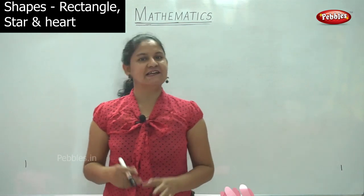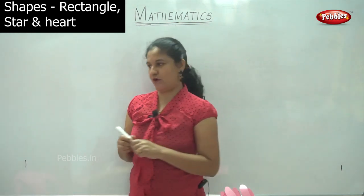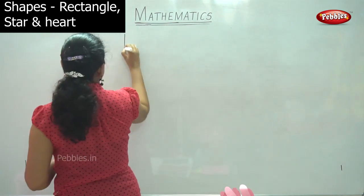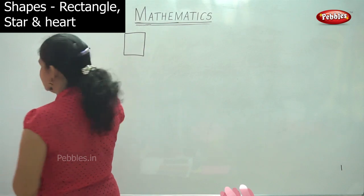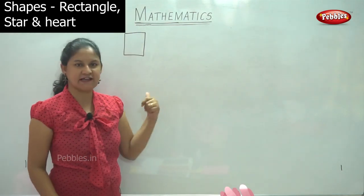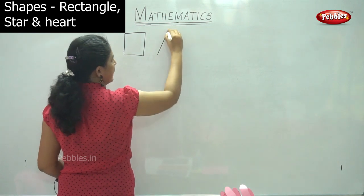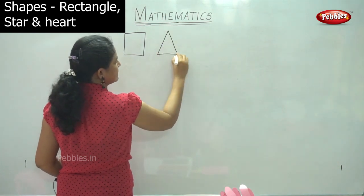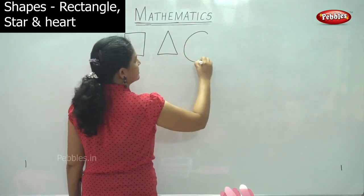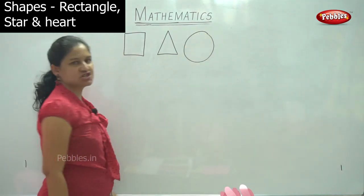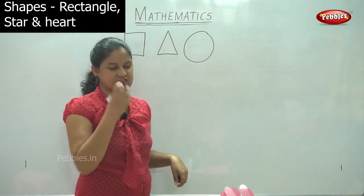Today we will be seeing shapes. We have already seen a square, which has all four sides equal and all angles equal. Then we seen a triangle which has three sides and the circle. So these are the three shapes that we have seen. We will move on to the next three shapes.